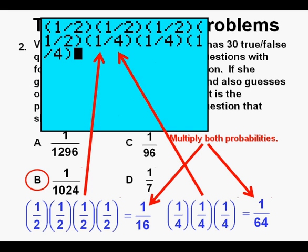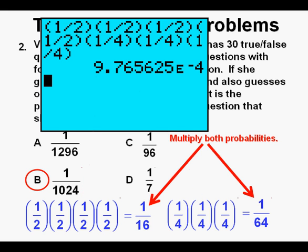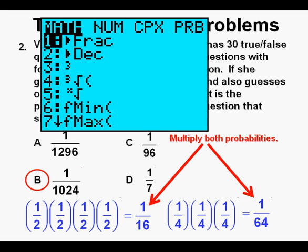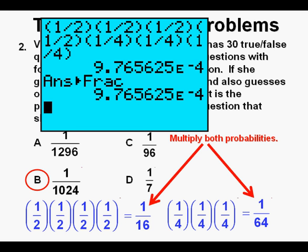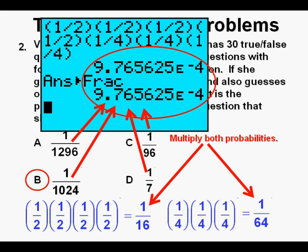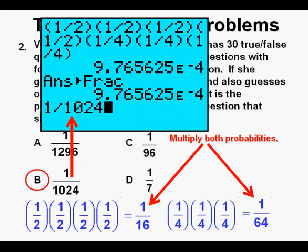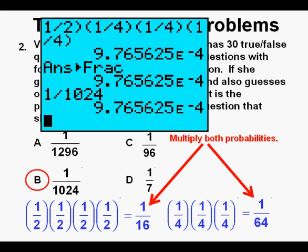Another way to do this is to enter all the independent probabilities at the same time and press Enter. We get 9.7656, etc., times 10 to the negative 4th. To convert this to a fraction, press the Math key and press Enter. It doesn't give us a fraction because the decimal approximation wasn't close enough for the calculator to recognize. However, we can try each answer and see which one gives us 9.7656 times 10 to the negative 4th. Entering 1 over 1024 and pressing Enter gives us 9.7656, etc., times 10 to the negative 4th, confirming B is our correct answer.